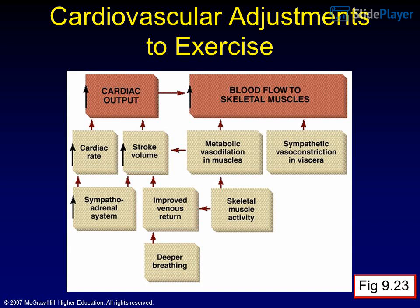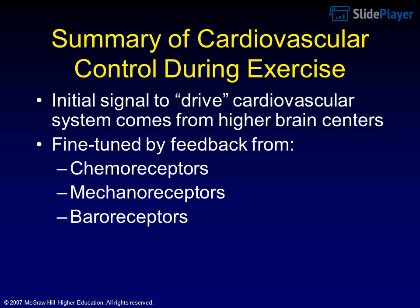Cardiovascular adjustment to exercise and a summary of cardiovascular control during exercise are shown in Figures 9.23 and 9.24. The initial signal to drive the cardiovascular system comes from higher brain centers, fine-tuned by feedback from chemoreceptors, mechanoreceptors, and baroreceptors.